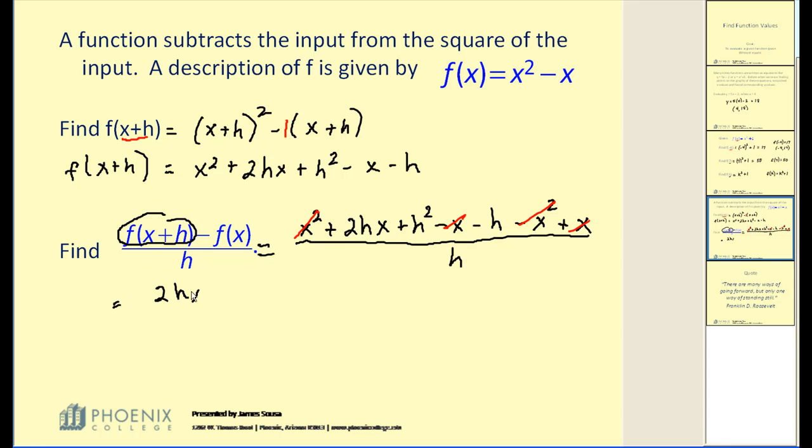We have 2hx plus h squared minus h. Now, dividing all of that by h, notice they all have an h in common. So what I'm going to do is divide them all by h individually. Remember, you're allowed to do that as long as you're dividing by a monomial one term. And the reason I did that, it's very easy to simplify these now. Notice how the common factor of h here and here, one common factor of h here, that would turn into h to the first power. And h over h would simplify as well. So what's left? We have 2x plus h and then this is minus 1.